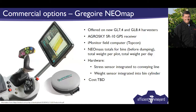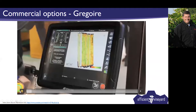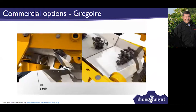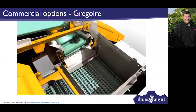There's also the Gregoire NeoMap system. Jackie has a video embedded on this slide. It works fairly similarly to the ATV — grapes come off a belt over a false weigh frame which records an electric signal that you convert into a weight.